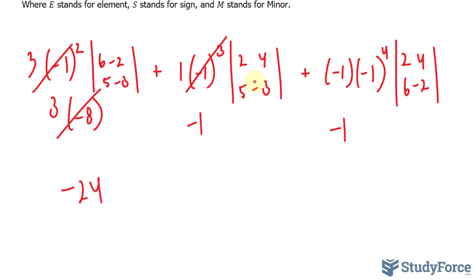Over here, 2 times negative 3 is negative 6. Minus 20, that's negative 26. Multiplying these two factors, we end up with plus 26.